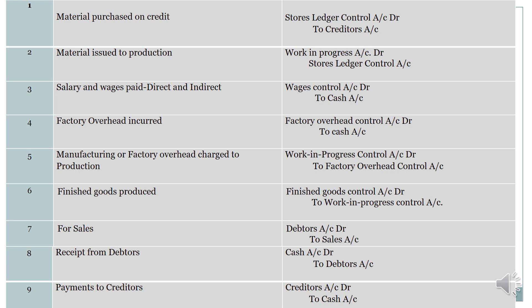The fifth transaction is manufacturing or factory overheads charged to production. Since production activity is in progress, work in process control account is debited to factory overhead control account. The sixth transaction is finished goods produced — finished goods control account is debited to work in progress control account. The seventh transaction is sales.